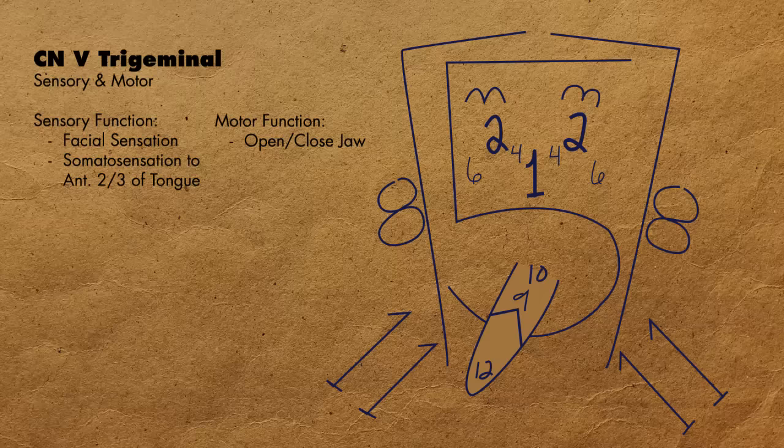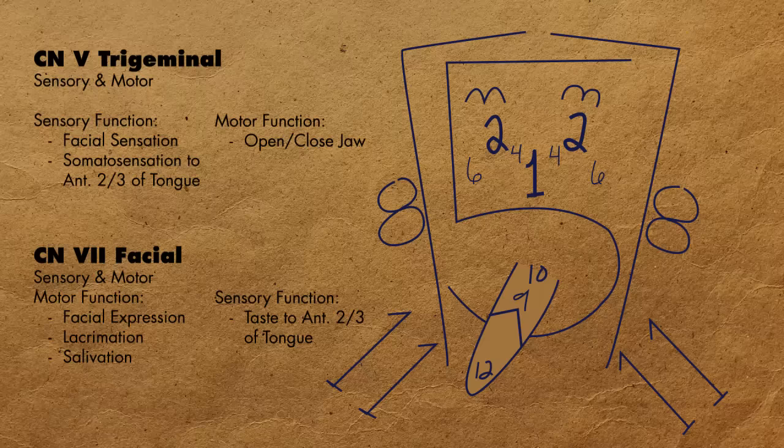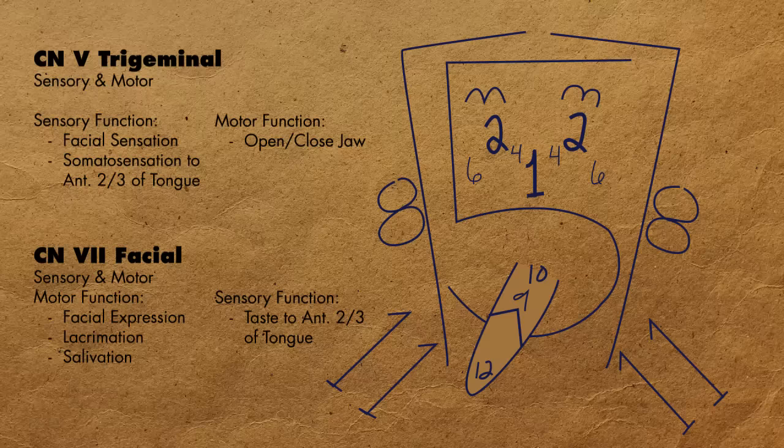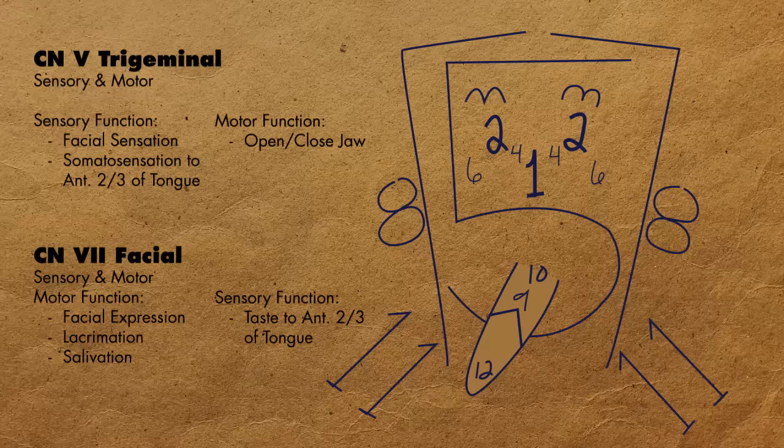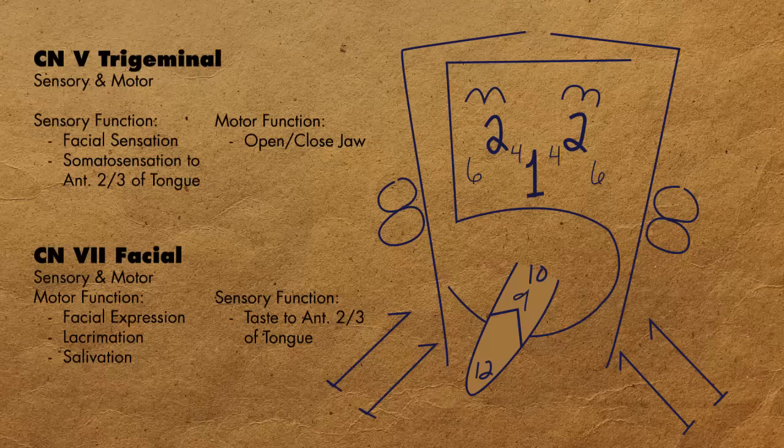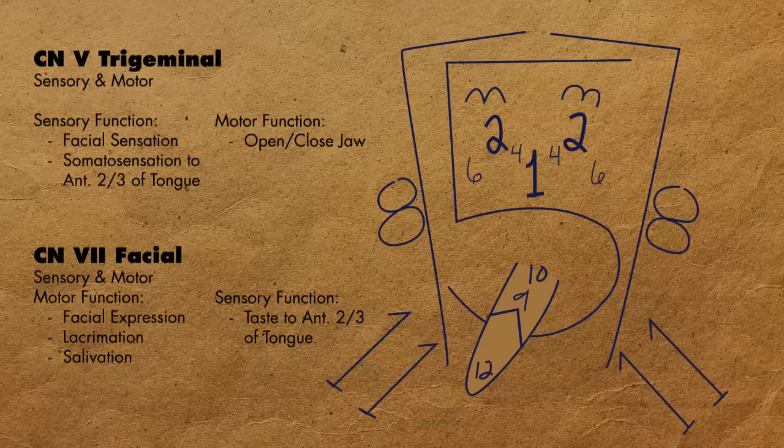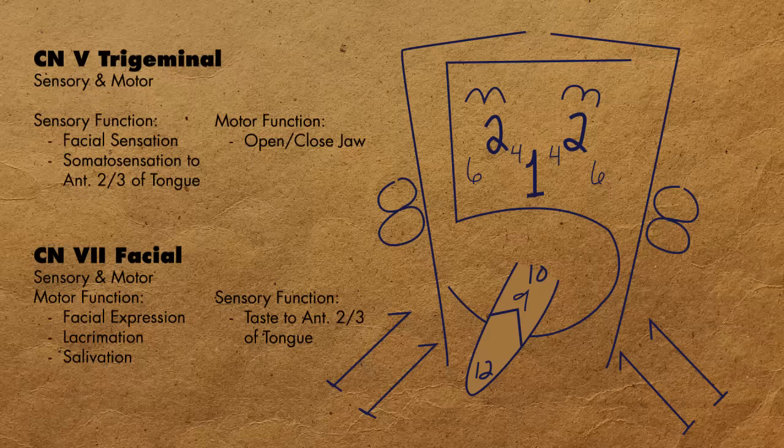Cranial nerve 7, the facial nerve, is also a mixed sensory and motor nerve. Its motor component is responsible for facial expression and facial movement, so things like frowning and smiling are all due to cranial nerve 7. Its sensory component, on the other hand, is responsible for taste on the anterior two-thirds of the tongue. This is why we also have it located on the tongue on our drawing. However, don't confuse this with cranial nerve 5's involvement with somatosensation to the anterior two-thirds of the tongue, which is a different type of sense.